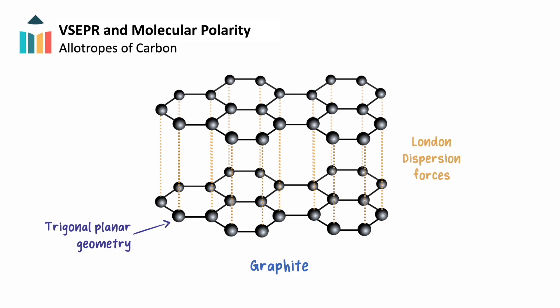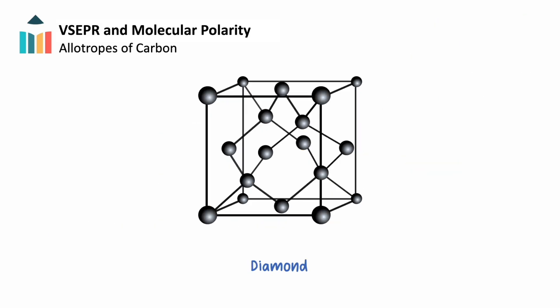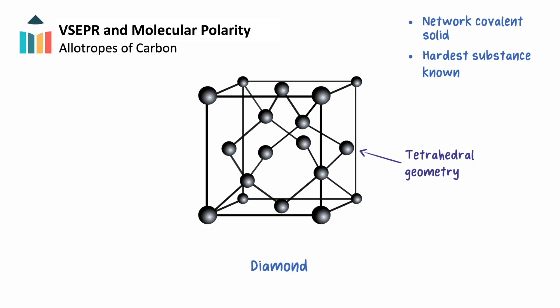Graphite is a good conductor of electricity, is very stable, and is used in the core of pencils and as a lubricant due to the ability of sheets of graphite to slide past one another. In diamond, each carbon atom is bonded to four other carbons in a tetrahedral geometry. Diamond is considered to be a network covalent solid and is the hardest substance known, with a very high melting point.